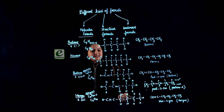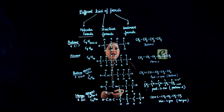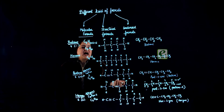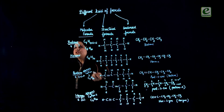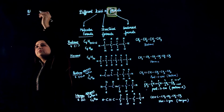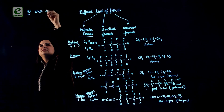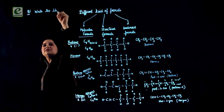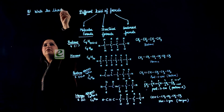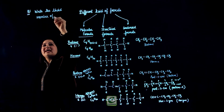Similarly, if you put the triple bond after position 2, you will get the name hex-2-yne. Now there are some frequently asked questions I would like to discuss. Question number one: write the third member of alkane.